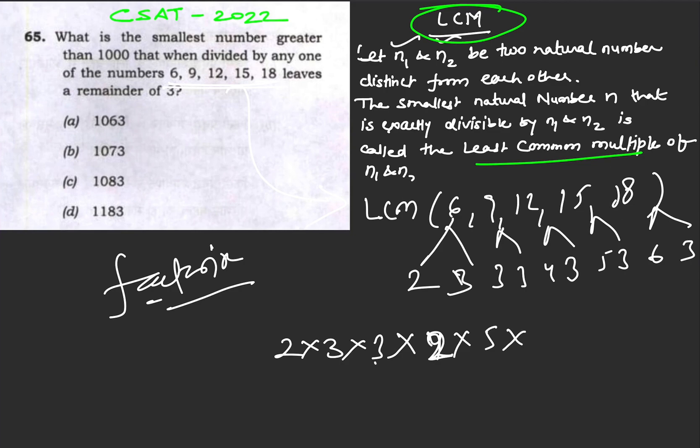For 18, 6 is already there - it's here as 2×3. So the LCM is 2×2×3×3×5.